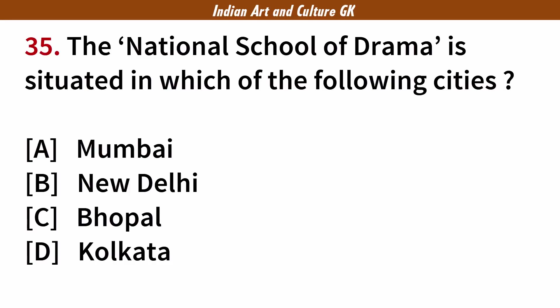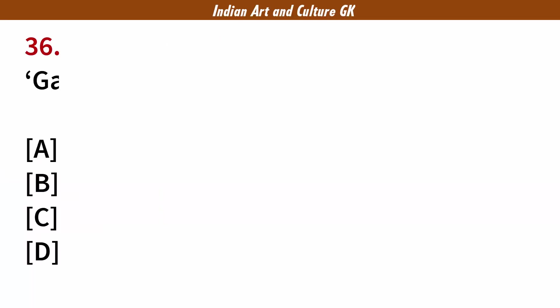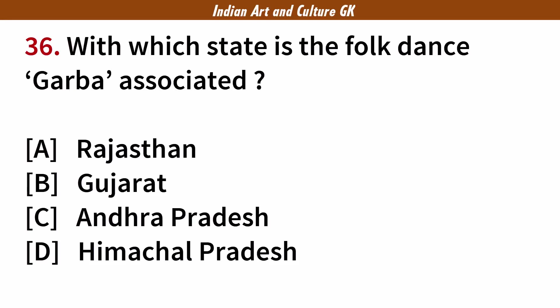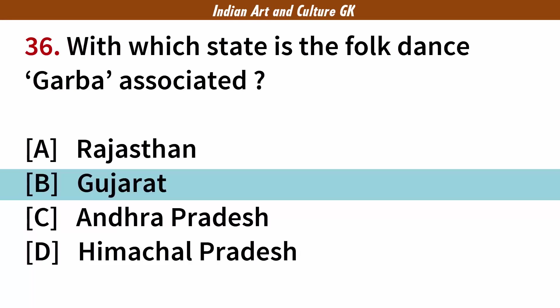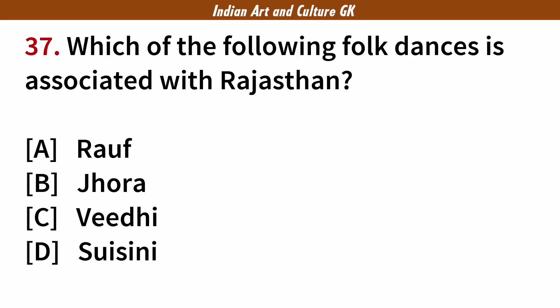The National School of Drama is situated in which of the following cities? Answer: B. New Delhi. With which state is the folk dance Garba associated? Answer: B. Gujarat. Which of the following folk dances is associated with Rajasthan? Answer: D. Ghoomar.